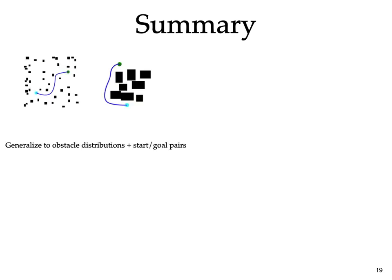In summary, the proposed approach allows us to learn to predict covariances that work on different obstacle distributions and start goal states, thus eliminating the need for excessive hand-tuning.